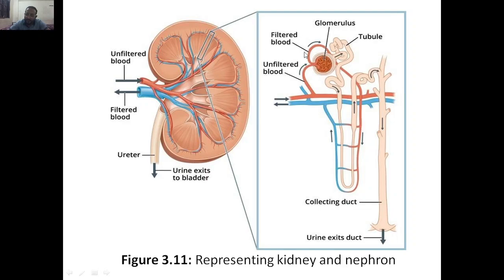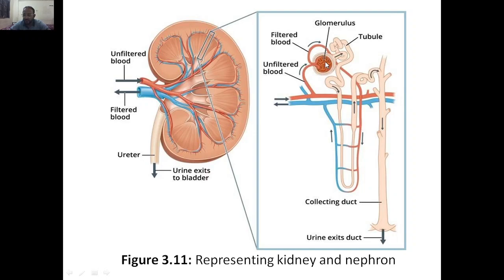Every kidney has 1 million nephrons, and here we are talking about only one nephron. Blood enters the nephron, which has various structures. Unfiltered blood will go into the glomerulus. When it enters the glomerulus, filtration is initiated. The glomerulus collects the blood and filters it. All one million nephrons will have one million glomeruli, and all glomeruli are involved in filtration.